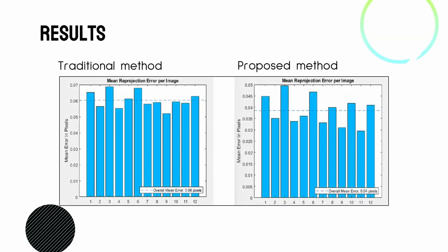The result shows the calibration errors of the camera comparing with traditional method and the proposed method. The overall mean reprojection errors of the traditional method is 0.06 pixels, and the overall mean reprojection errors of the proposed method is 0.04 pixels, an improvement of 33%.